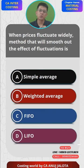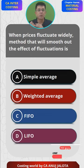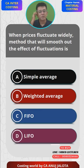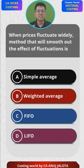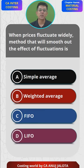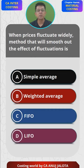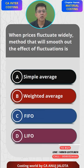Under FIFO method, we separate out all the lots — this lot purchased at this price, this lot at that price. So the final stock that remains will be at either a very high or very low price, not an average price. Simple average is a problematic method because it gives the average without taking into account the quantity. So out of the four options, the correct answer should be weighted average — option B.